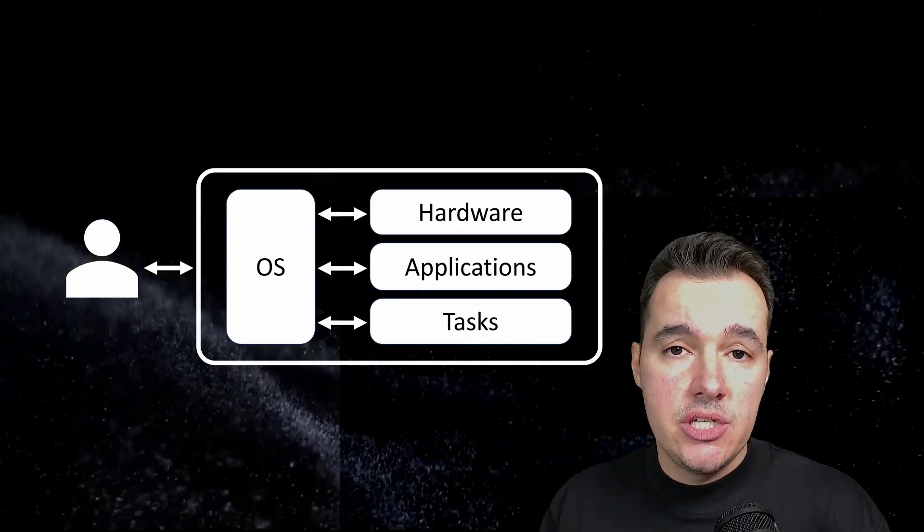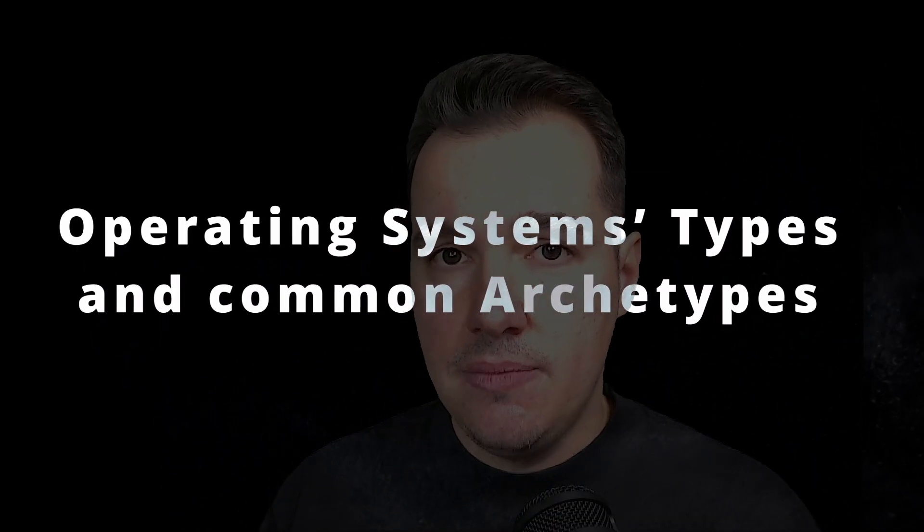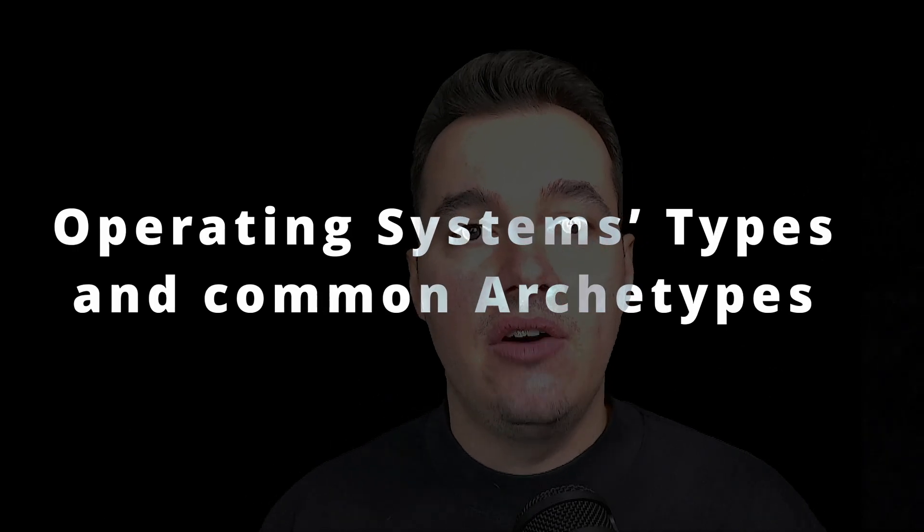This is how an operating system coordinates all the parts of a computer, a smartphone, or pretty much any device you are working with. Operating systems are the backbone of every device we use — from smartphones to laptops and even embedded systems. They manage the complex tasks that make our devices work, often without us even noticing.